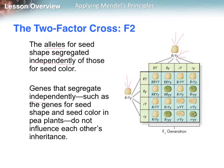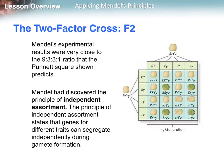Genes that segregate independently, such as the genes for seed shape and seed color, do not influence each other's inheritance — acquiring one of those traits does not mean you inherit the other. Mendel's experimental results were really close to the 9 to 3 to 3 to 1 ratio shown in the Punnett square. Mendel had discovered the principle of independent assortment, which states that genes for different traits can segregate independently during gamete formation — just because you inherit one trait does not necessarily mean another is coming with it.